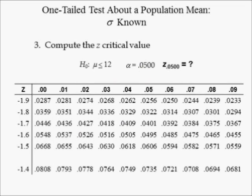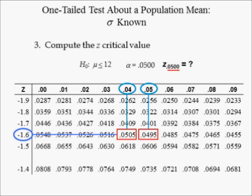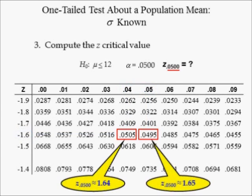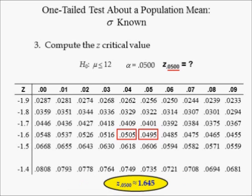In step 3 we compute the critical value. The alternative hypothesis tells you that this is an upper tail test. Since the significance level is 0.0500, we want to find the critical value z subscript 0.0500. The closest probabilities in the standard normal probability distribution table are 0.0505 and 0.0495, which are both equally good approximations of 0.0500. Thus, there are two equally good approximations for the critical value: 1.64 and 1.65. When this happens, we average the two values: 1.64 plus 1.65 equals 1.645, divided by 2.